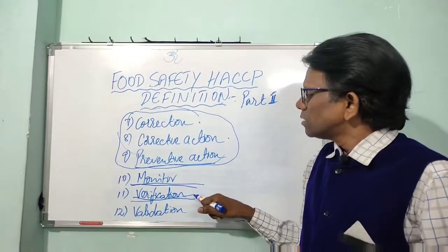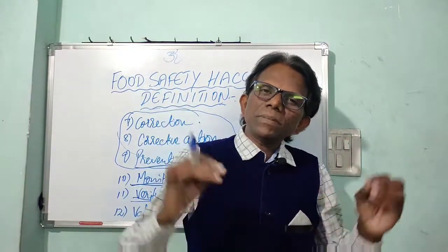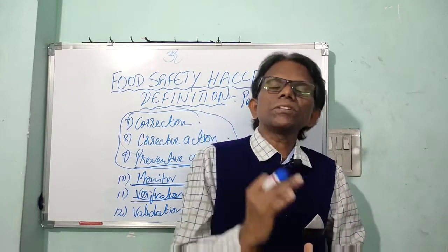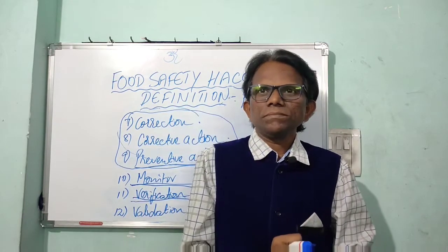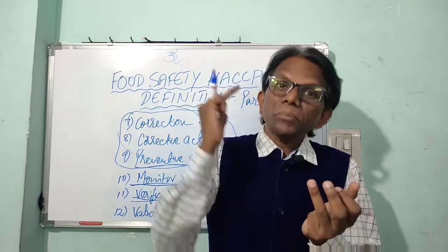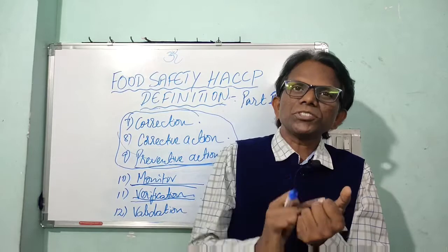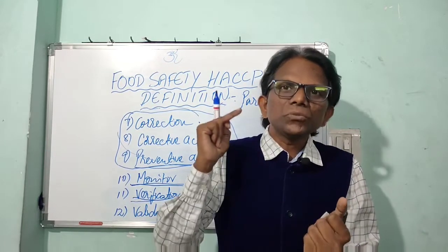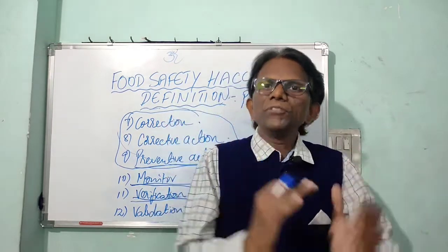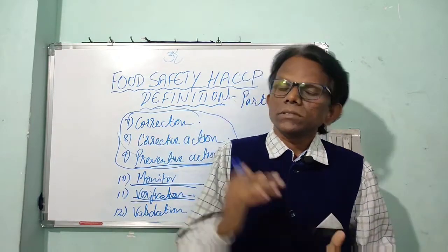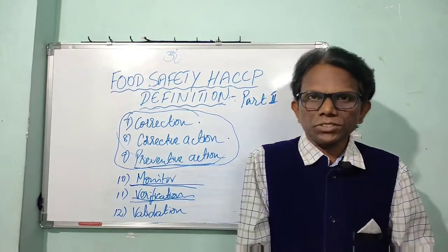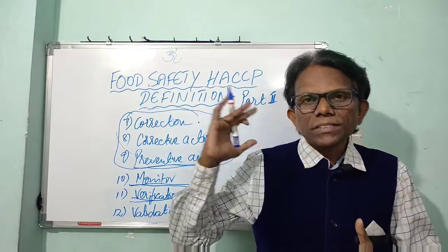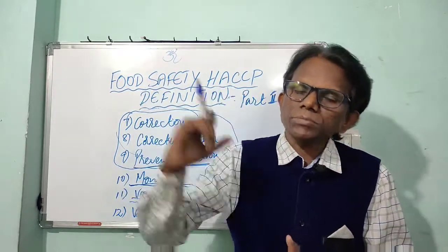Next is verification. The definition of verification: verification is the application of methods or procedures, tests, and other evaluations in addition to routine monitoring, to determine whether a control measure has been operating as intended in the food safety plan. We have to verify the CCP mechanisms, the HACCP systems, procedures, methods, tests, and other evaluations besides routine monitoring. This is verification of critical limits, verification of CCP records, and verification of the HACCP system.